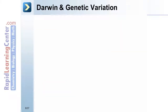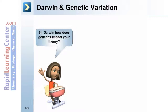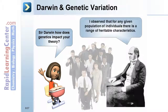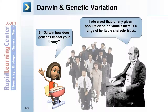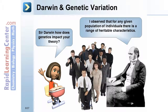On the impact of genetics, Darwin observed that for any given population of individuals, there is a range of heritable characteristics.